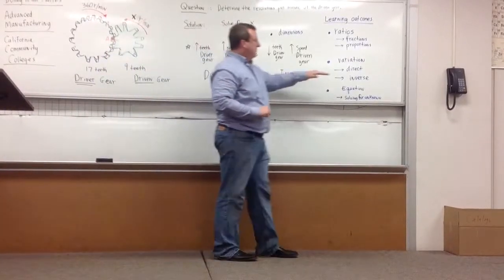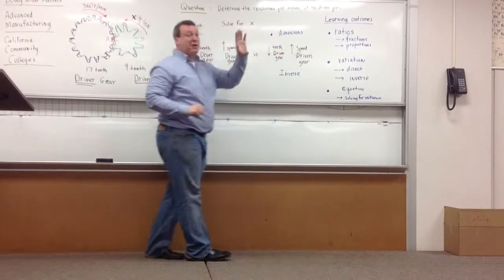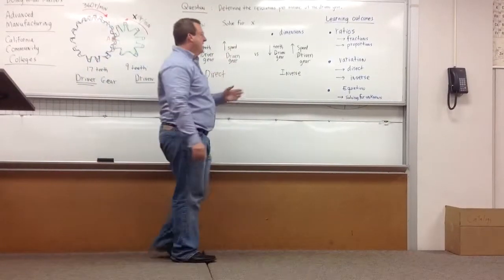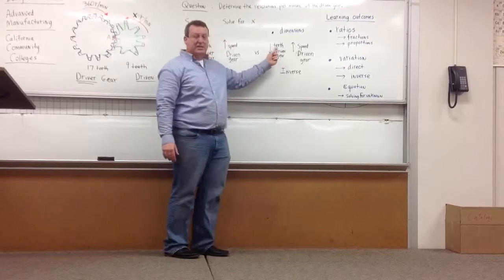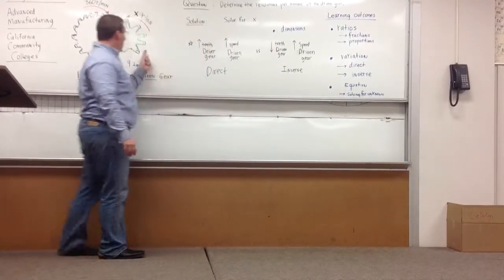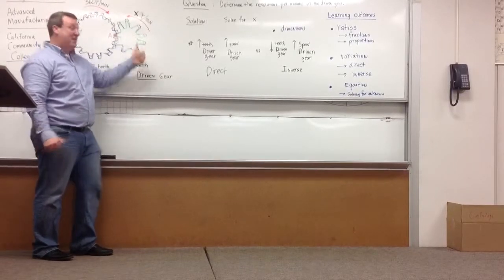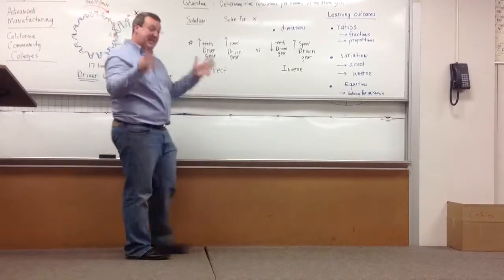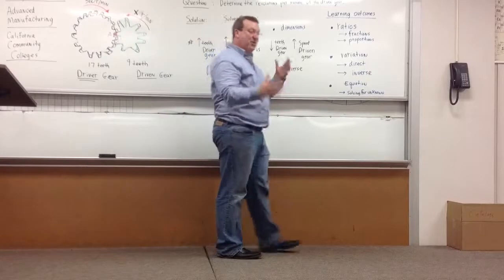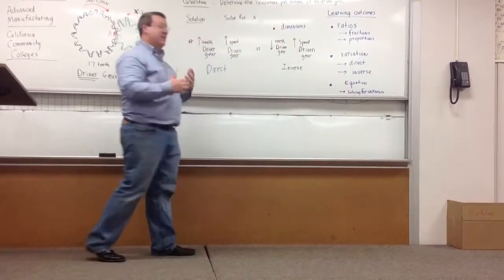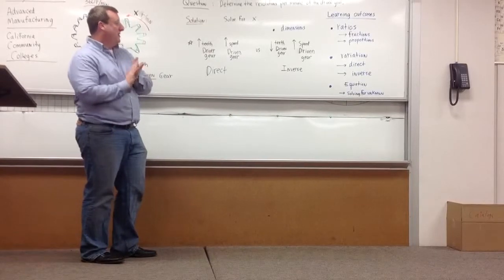An inverse relationship is when one variable goes up and the other variable goes down, or vice versa. They go against each other. So if the number of teeth in the driven gear went down, the speed of the same driven gear would have to go up to compensate. That's an inverse relationship. It's very important to understand them when you're working on things.